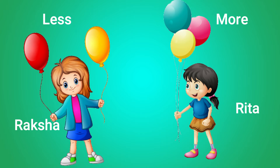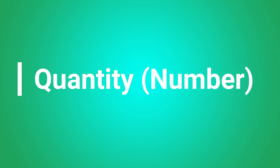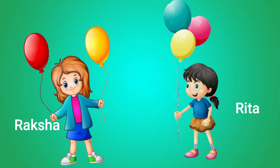Generally we will be comparing two objects based on their size, height, length, or weight. Similarly, to find out who is having more balloons, we compared two objects based on quantity. What do we call it, children? Yes, we call it quantity. Now see the picture again — look at the balloons in the hands of Rooksha and Rita.